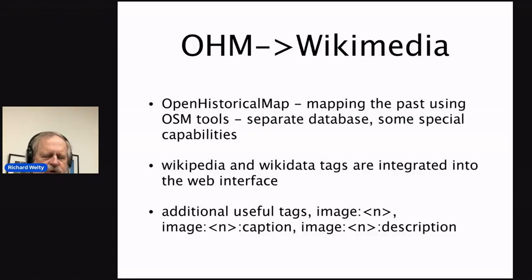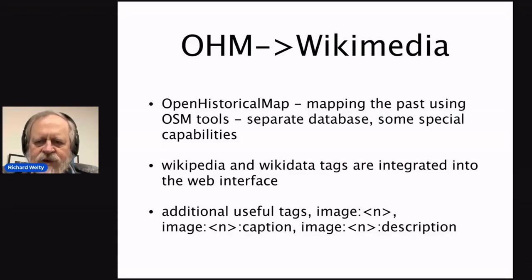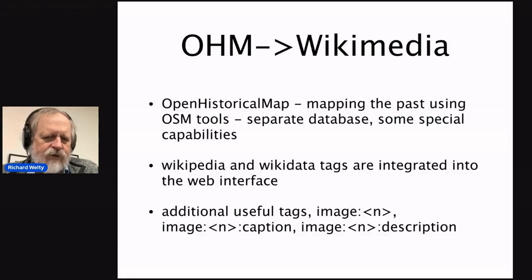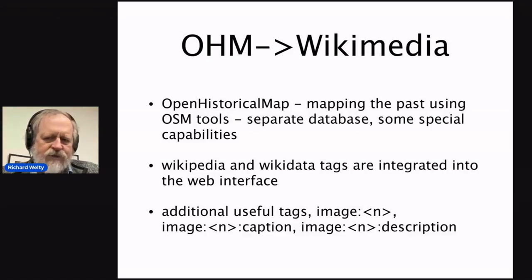OpenHistoricalMap is a version of OpenStreetMap — it uses the same tools, but it's a separate database with some unique capabilities and differences. It uses the same Wikimedia and Wikipedia tags, but they're integrated into the web interface and there are additional useful tags for linking to images. The image tags aren't tied to anything in Wikimedia, but common practice today is to use Wikimedia Commons as the source of images.